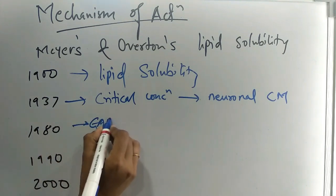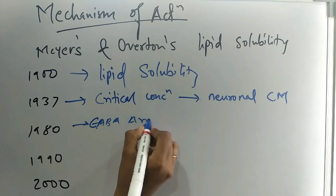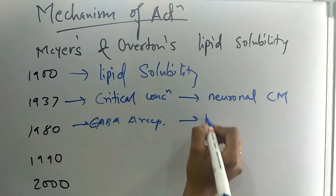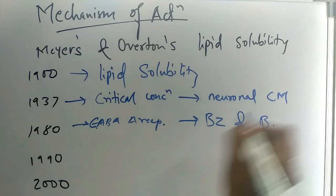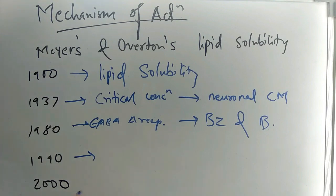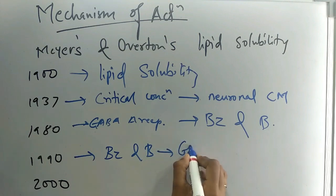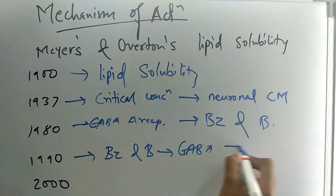In 1990, it was observed that when there is binding between benzodiazepines or barbiturates with GABA, there is opening of chloride channel.